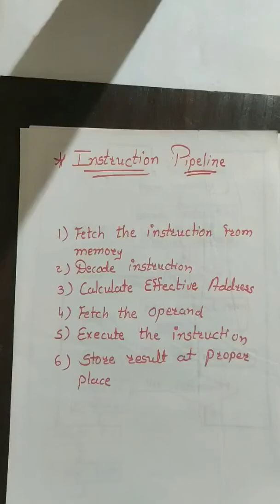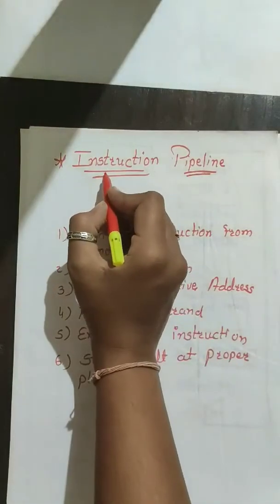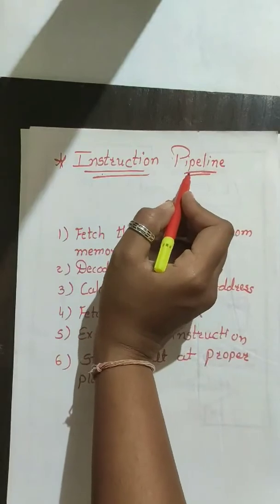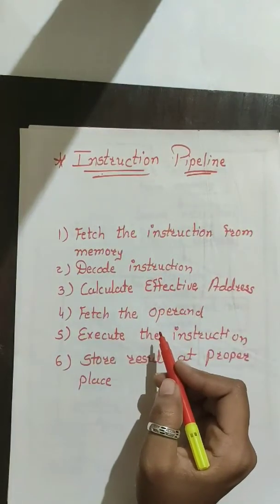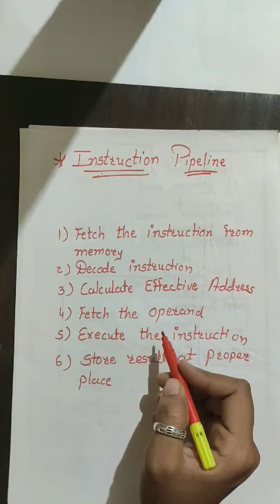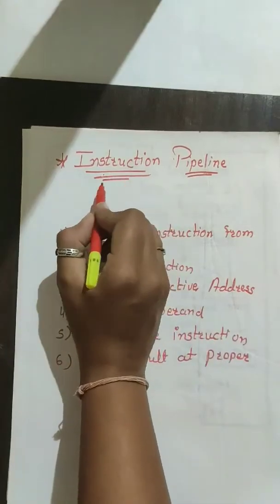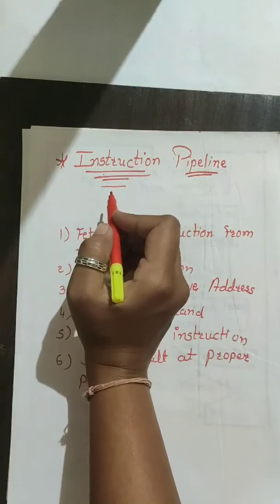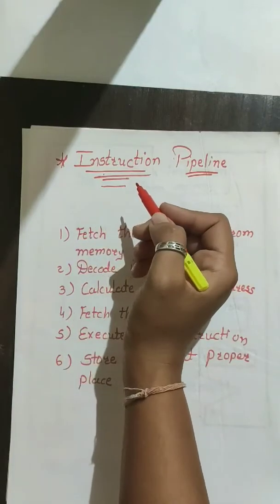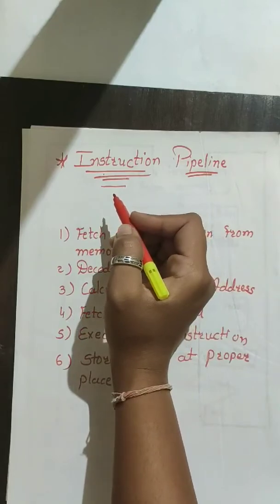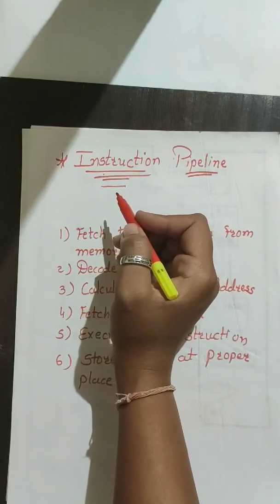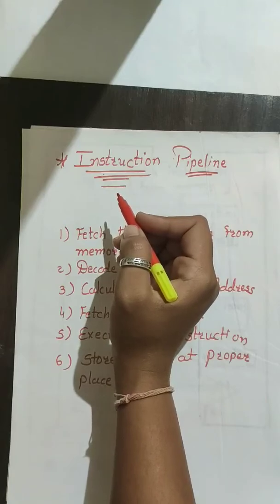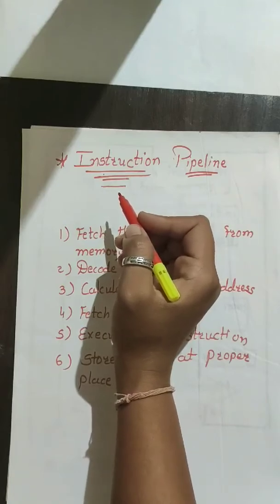Hello everyone. In this video lecture we are going to study about instruction pipelining. Pipelining process can occur not only in the data stream but also in the instruction stream as well. An instruction pipeline reads consecutive instructions from the memory while previous instructions are being executed in other segments. This causes the instruction fetch and execute phases to overlap and perform simultaneous operations.